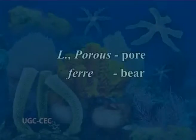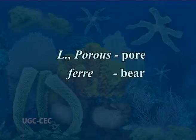Poriferans are commonly referred to as sponges. The surface of the sponge is perforated by millions of minute pores through which the water current bringing food and oxygen enters the sponge body. Therefore, Porifera — in Latin 'porus' means pore and 'ferre' means to bear. The name was given to this phylum by Robert E. Grant in 1836, meaning pore bearers, and refers to the porous structure of the body with numerous surface openings.